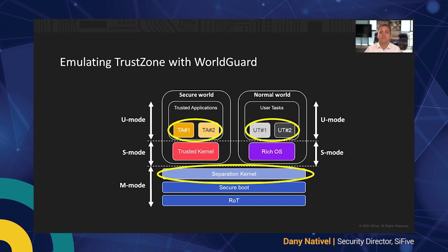One of the immediate benefits of having more fine-grained isolation is that we can even separate some of the sensitive components such as root of trust or secure boot from the separation kernel, which becomes the most trusted piece of code during runtime. We can also have tasks running at the same privilege level that are isolated from each other, so they can have their own memory and peripheral space and cannot interact with each other.